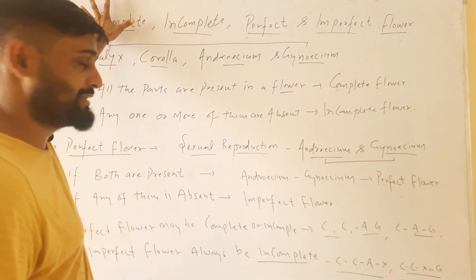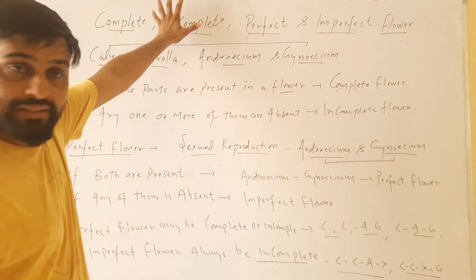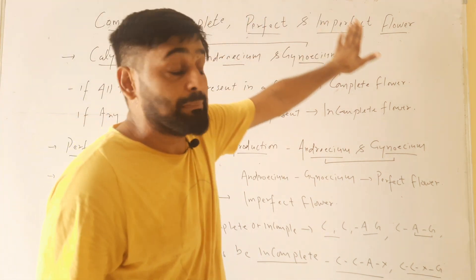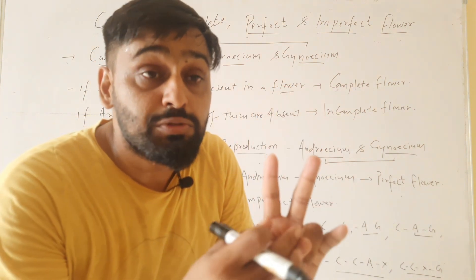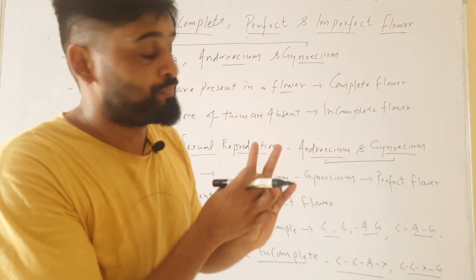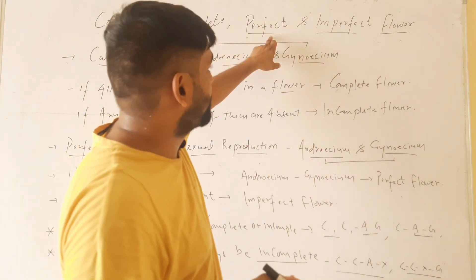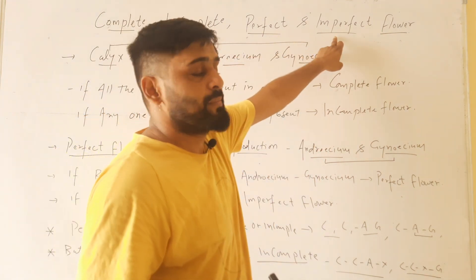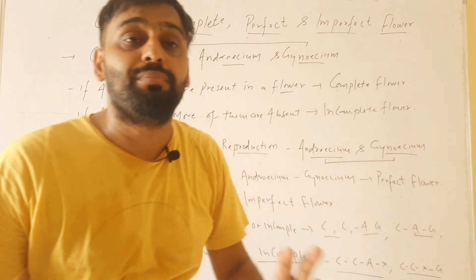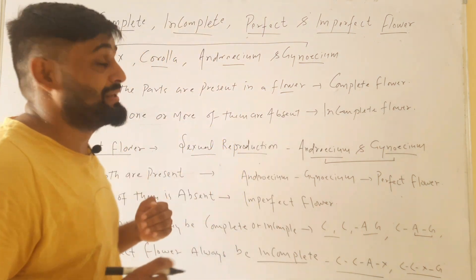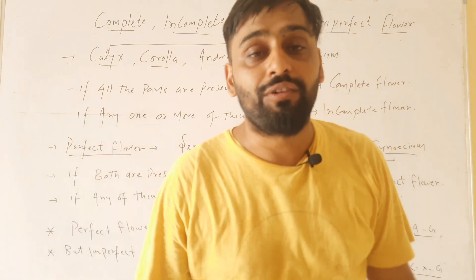So these are the four terms: complete, incomplete, perfect, and imperfect flower. If all parts are there, it is complete; if any one or more is missing, it is incomplete. For perfect and imperfect: if both androecium and gynoecium are present, it is perfect; if any one of them is absent, it is called imperfect. This is the difference between complete, incomplete, perfect, and imperfect flower.